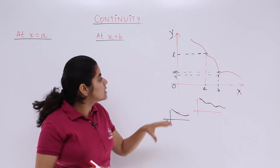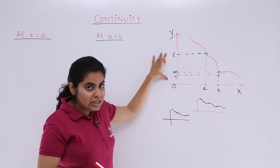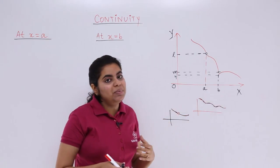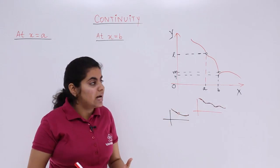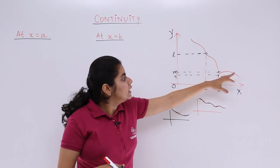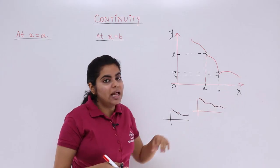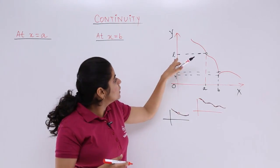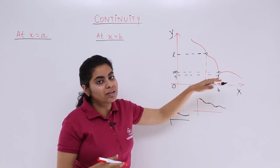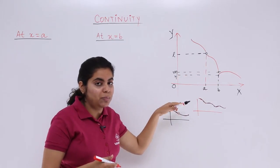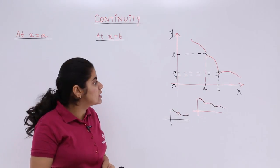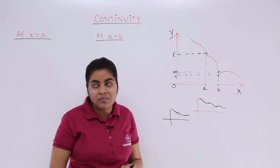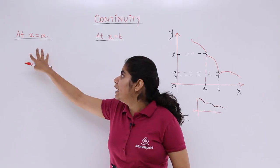Here I have a graph with an x-axis and y-axis. There are points L, M, N on the y-axis and A and B on the x-axis. The curve is drawn with red ink, and black ink is used to support the graph.